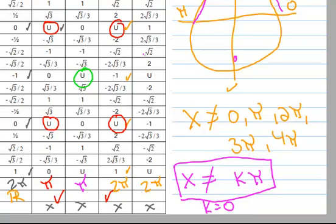In all of these cases, you can write where k is an element of the set containing negative 2, negative 1, 0, 1, 2, and so on — in other words, k is an integer. So there's the domain of the cotangent.